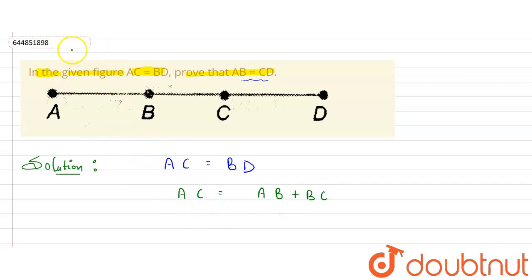And similarly, what we need to find? We need to find BD. So BD can be written as BC plus CD. Suppose this is my equation 1 and this is my equation 2.